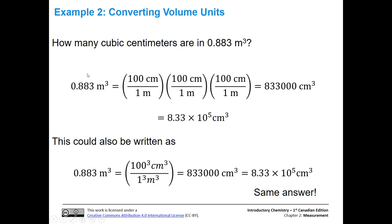So here's the math. Here's our meters cubed — I didn't separate them out into meter times meter times meter, but that's what they are. And here are our three conversion factors: 100 centimeters over one meter, three times. Each one of those is going to cancel out one of these meters in the numerator. So we multiply: 0.883 times 100 times 100 times 100.